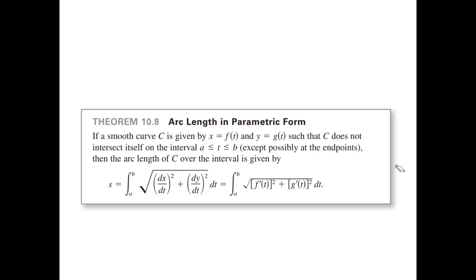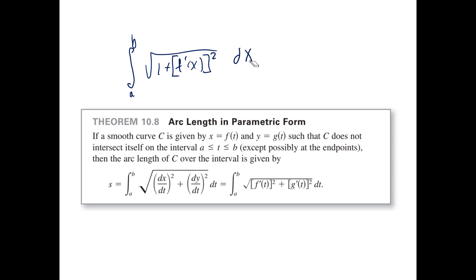In section 5a, using rectangular equations we found arc length as the definite integral from a to b of √(1 + (f'(x))²) dx. If you can parameterize your function, you can find arc length using the parametric formula: if a smooth curve C is given by x equals f(t) and y equals g(t), and C doesn't intersect itself on [a, b], then the arc length is the definite integral from a to b of √((dx/dt)² + (dy/dt)²) dt.